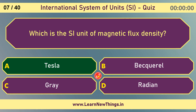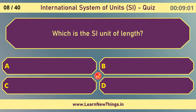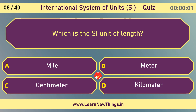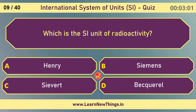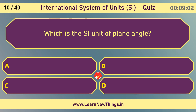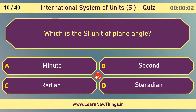Which is the SI unit of length? Meter. Which is the SI unit of radioactivity? Becquerel. Which is the SI unit of plane angle? Radian.